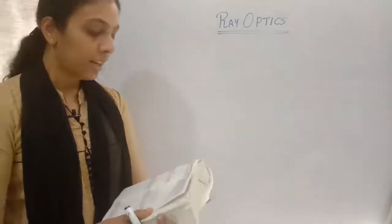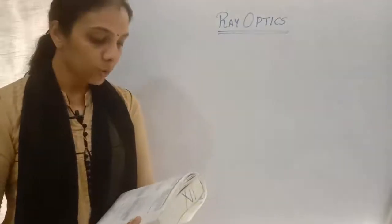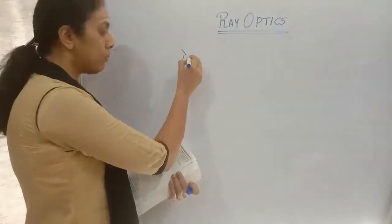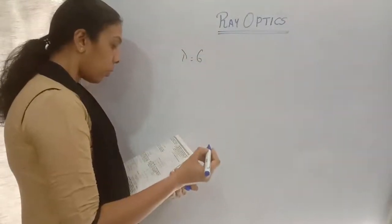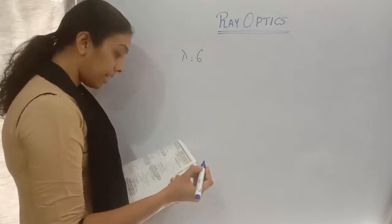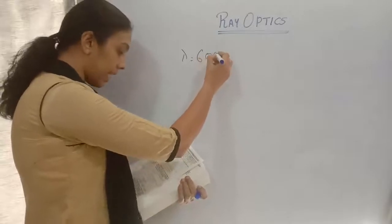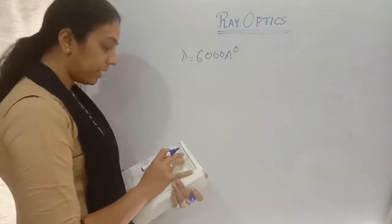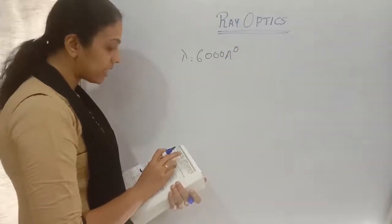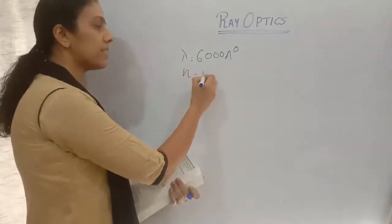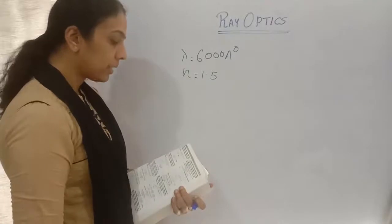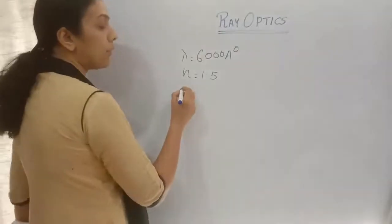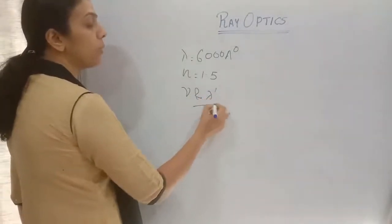First question: Light of wavelength 6000 angstrom in air enters a medium of refractive index 1.5. What are the wavelength and frequency of light in that medium? So wavelength is given as 6000 angstrom, refractive index is 1.5, and we need to find the new frequency (ν) and new wavelength (λ').